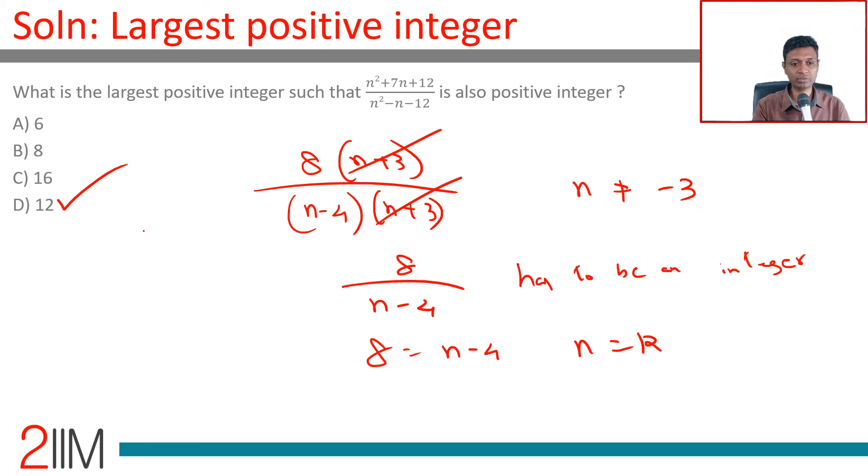Another way of doing this: factor as n plus 3 into n plus 4 by n plus 3 into n minus 4. n plus 4 by n minus 4 should be an integer.